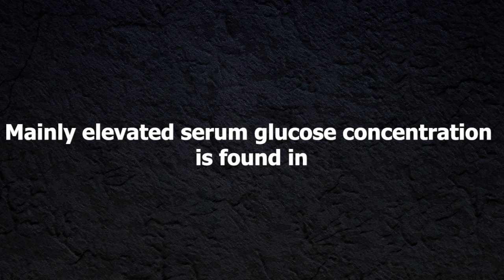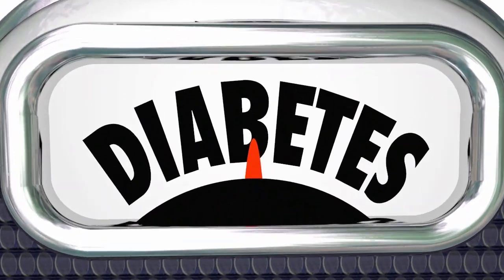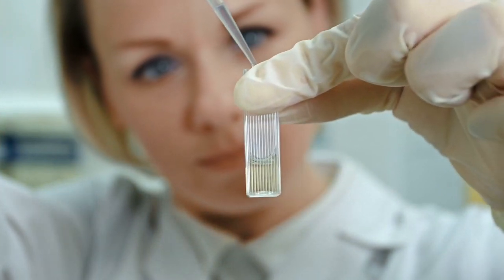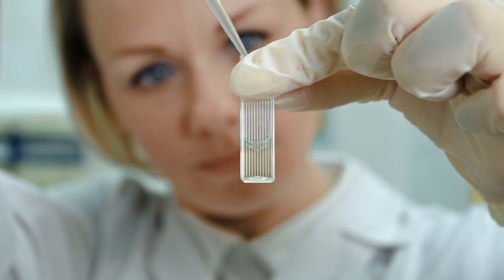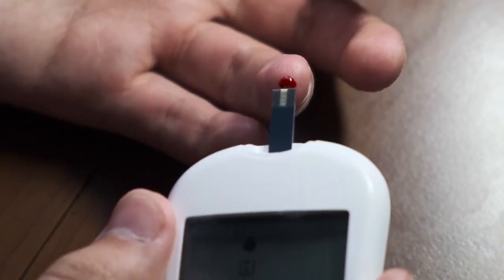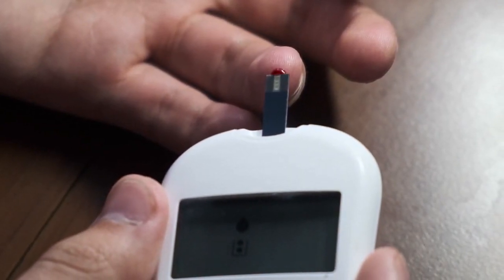Mainly, elevated serum glucose concentration is found in diabetes mellitus. Therefore, there are various methods to determine blood glucose level to maintain the glucose level in blood within the acceptable range.